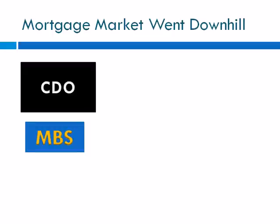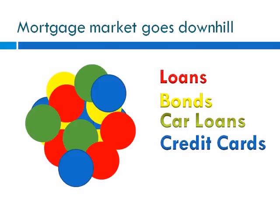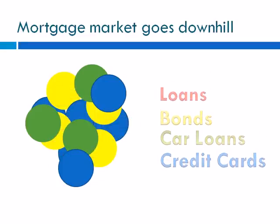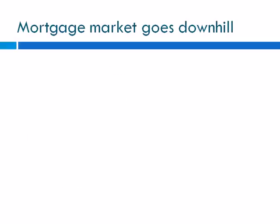Here is where the problem began: the mortgage market went downhill, and because of that many CDOs had tranches backed by subprime mortgages, which meant a lot of CDOs were in trouble. Investors did not anticipate that problems in the mortgage market would also affect the stability of the debt market, thereby affecting asset-backed securities. Problems in the housing market were linked to other debt industries — if housing prices fell, families no longer had as much equity, which they used to pay off loans, car loans, and credit cards. So when the housing market went downhill, many families couldn't make payments on regular loans, affecting the overall stability of collateralized debt obligations.